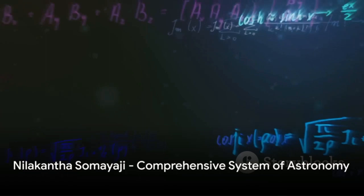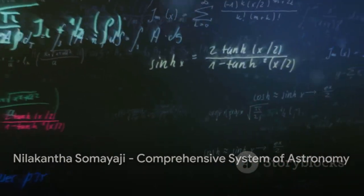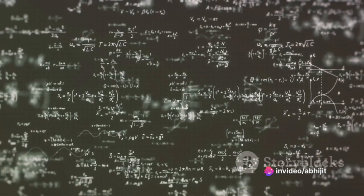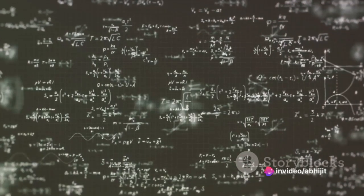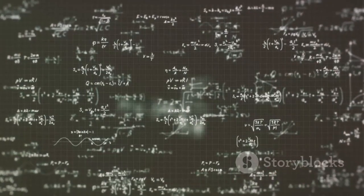Fast forward to the 15th century, Nilakantha Somayaji made significant contributions to astronomy and mathematics. He is best known for his work Tantra Sangraha, in which he presents a comprehensive system of astronomy.